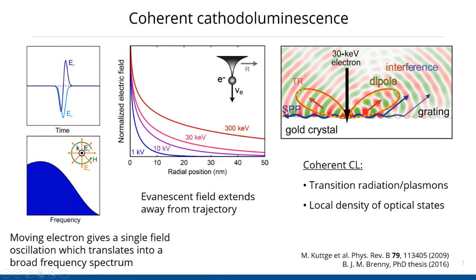If you perturb the electron — for example by letting it pass through an interface where the dielectric environment changes — the electron couples to and polarizes the electrons in the material. That polarization charge can directly radiate, known as transition radiation, but it can also couple to other electromagnetic modes such as surface plasmons that propagate across the interface, couple out through corrugations like a grating, and can then be detected by cathodoluminescence. Because the electron beam is confined, it has a broad momentum distribution, allowing it to directly couple to propagating plasmon modes — something that is forbidden for light.